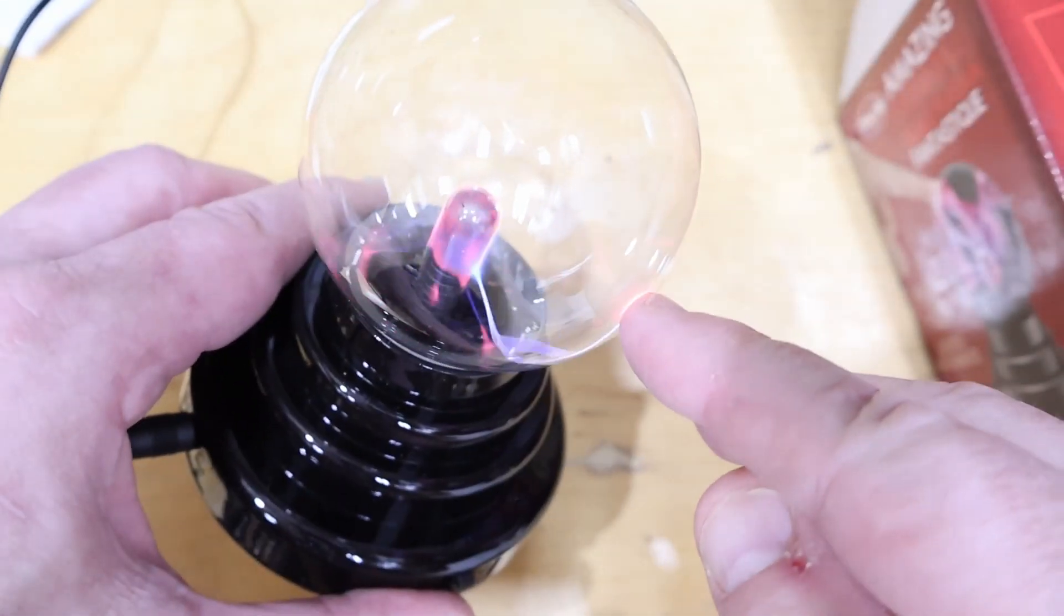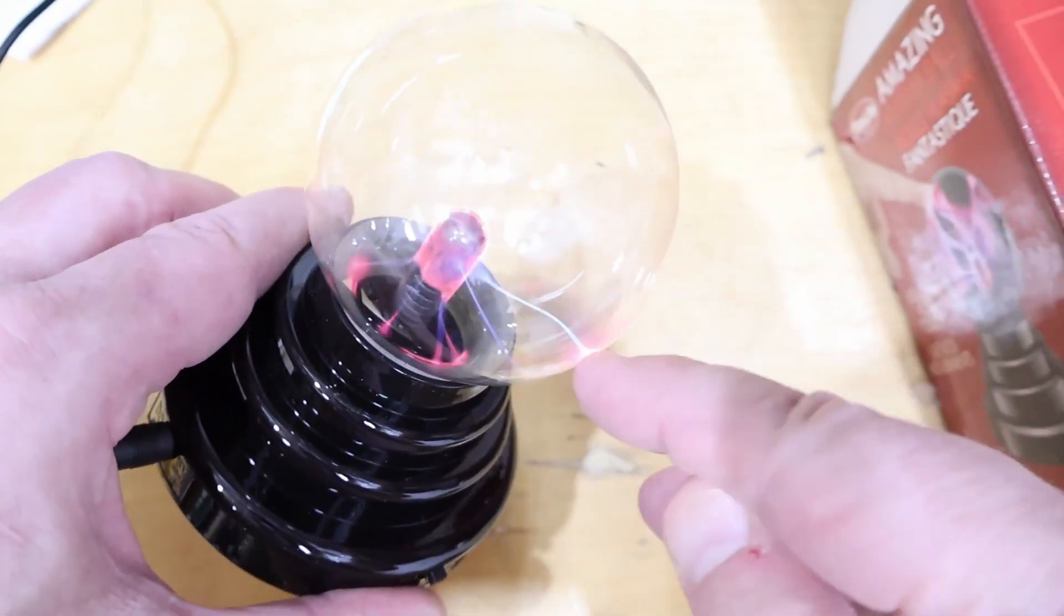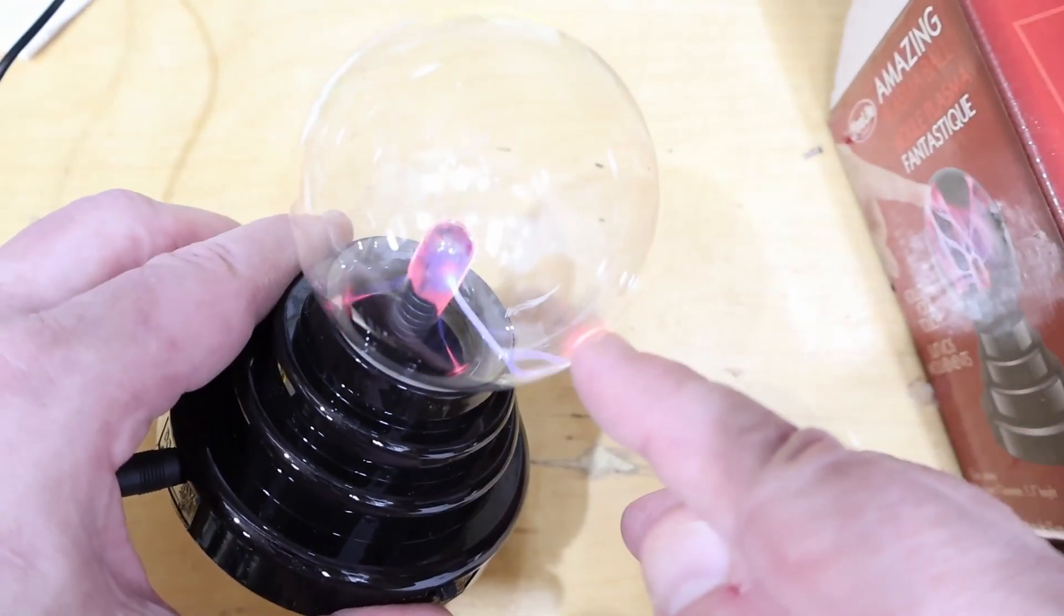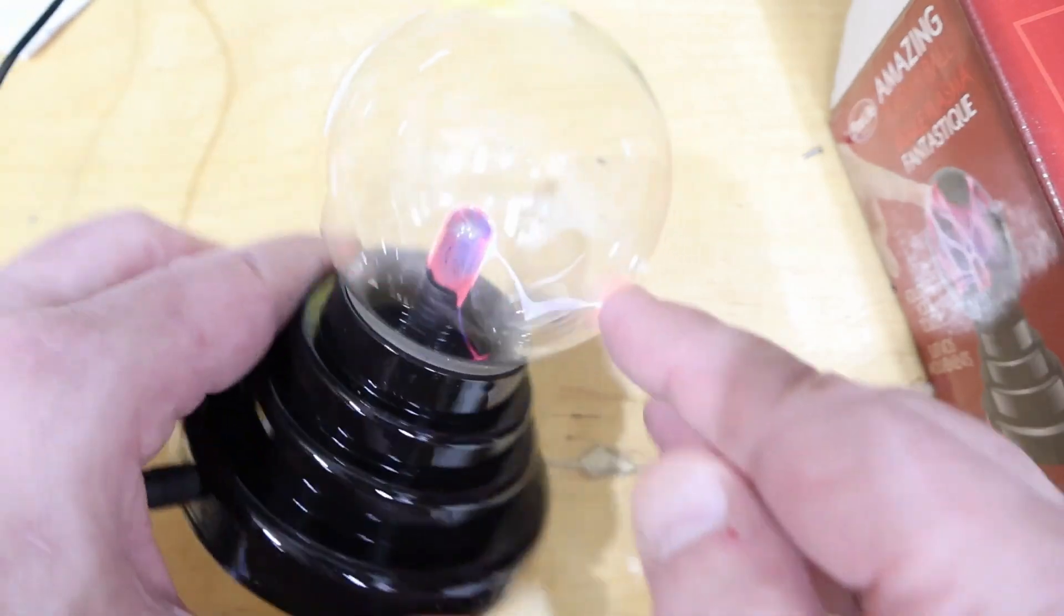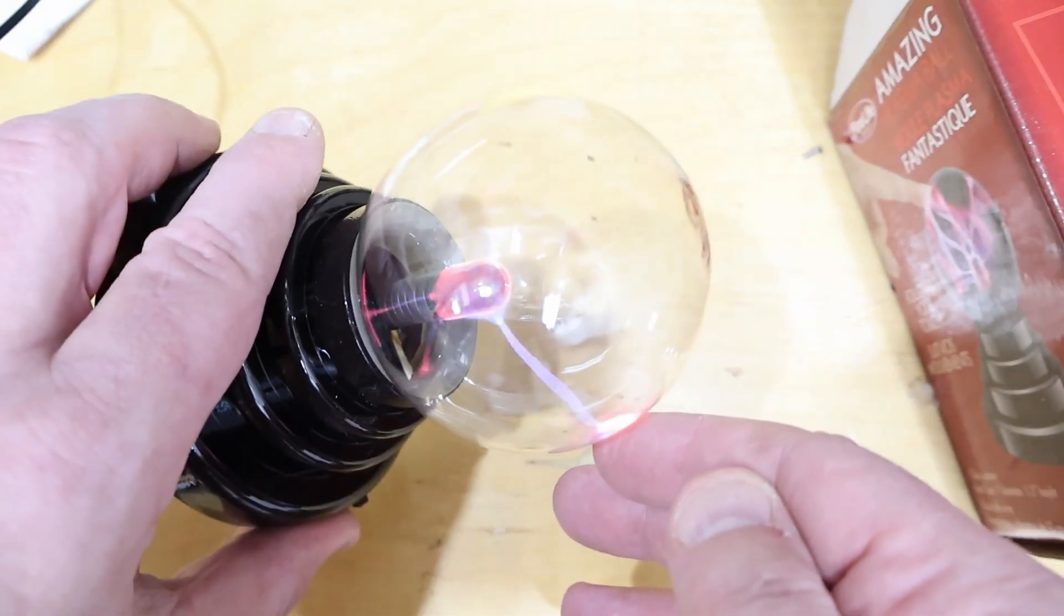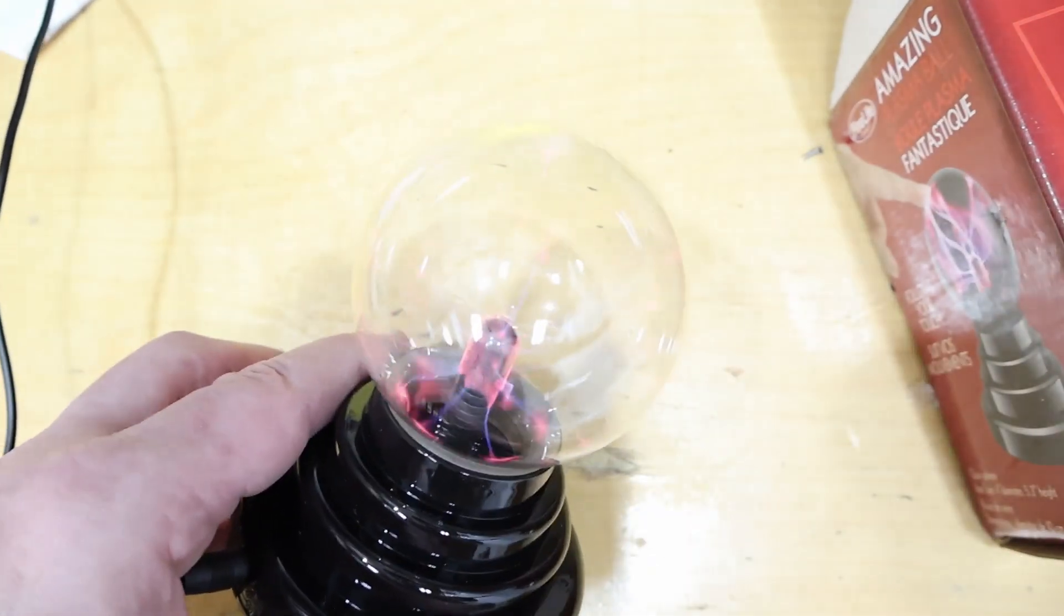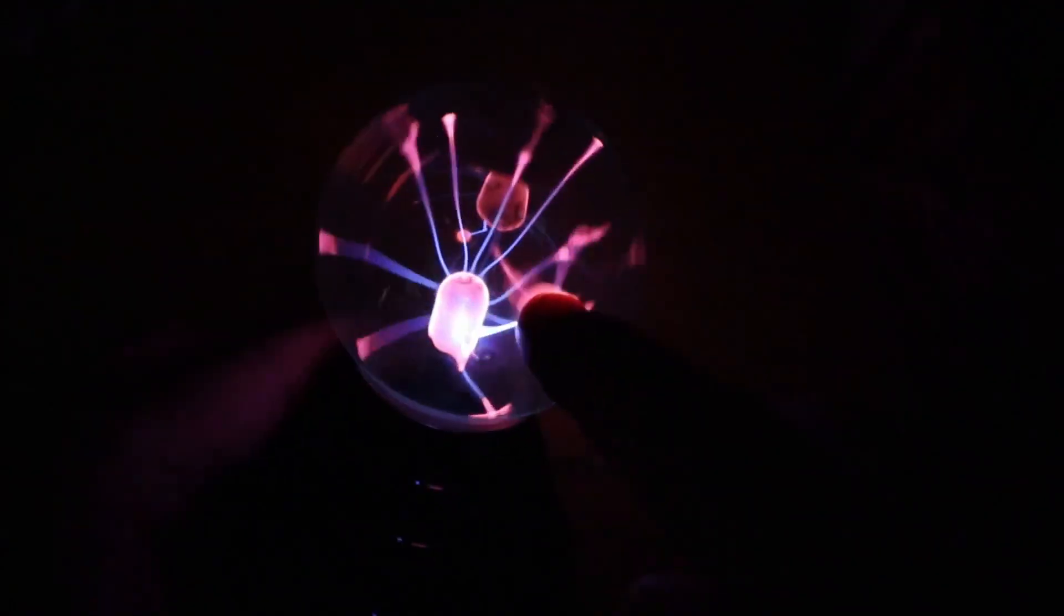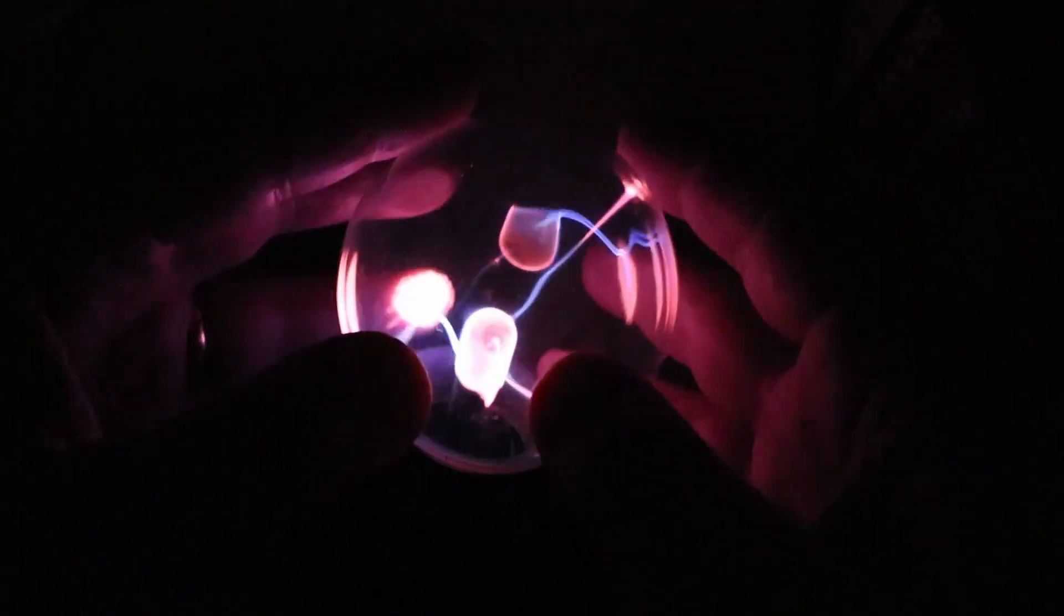As you can see, it's on and producing plasma inside. When you touch it, which presumes your body is conductive or capacitive, it draws the electrons towards you. Turn the lights off, and you can see it's legitimately incredible—a pretty neat effect, to say the least.